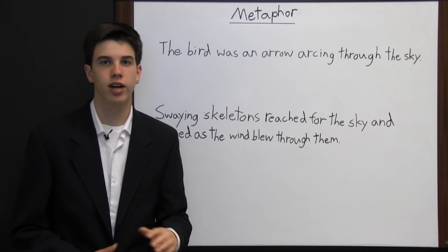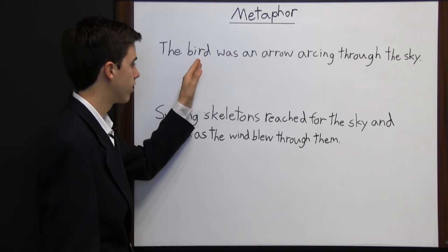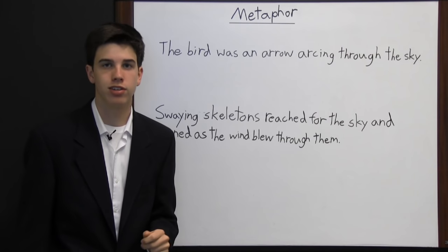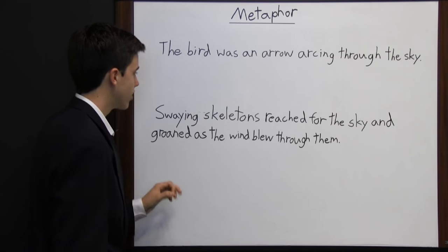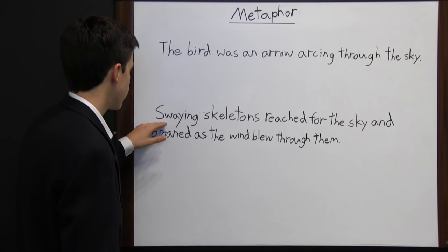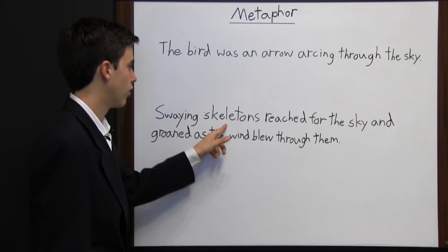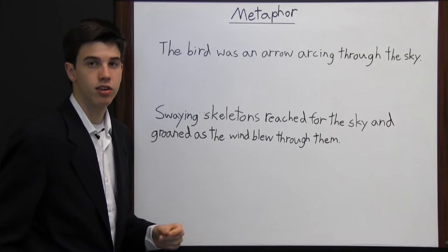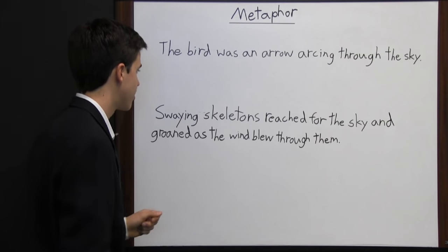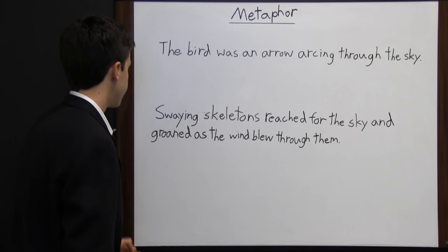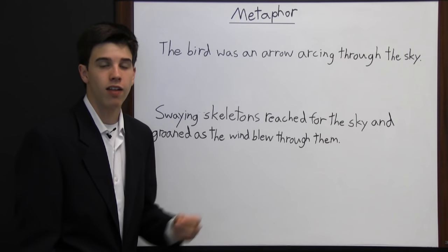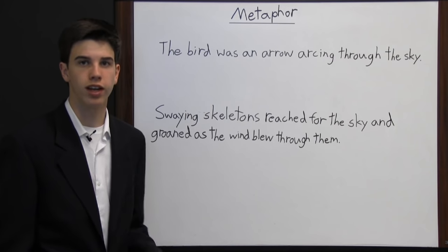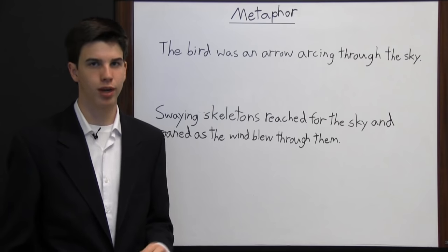Sometimes authors use metaphors without directly telling you what they're talking about. Consider: "swaying skeletons reached for the sky and groaned as the wind blew through them." We don't know exactly what the author is talking about, but we can infer they mean trees — trees sway back and forth, and in winter without leaves they look like skeletons. This is another example of a metaphor where the author compares trees to skeletons, allowing the reader to look at trees from a different perspective.